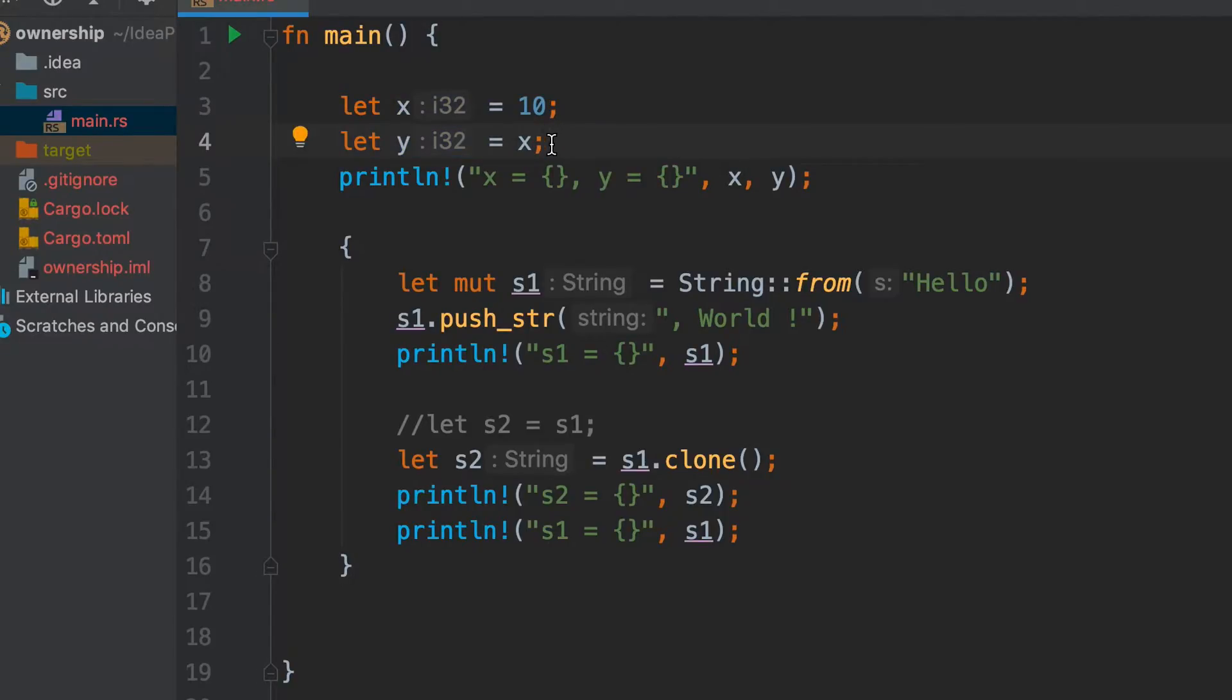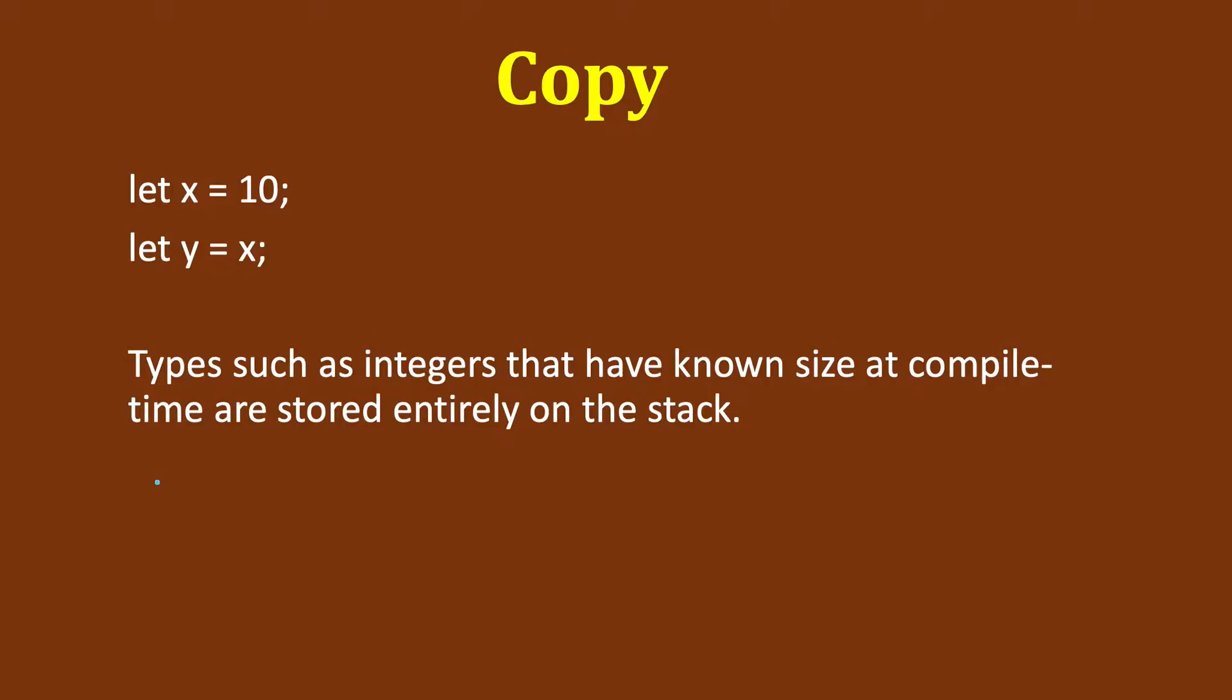These data were automatically copied because we knew the exact size of these variables at compile time. So the copying of the stack data is very easy and quick. Clone wouldn't do anything different here. Now Rust has a special annotation called copy trait.